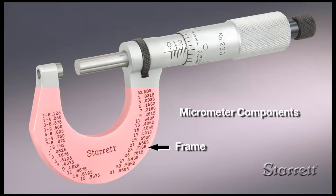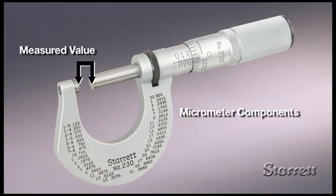The micrometer is built around a frame with a fixed anvil to the left and a numbered scale sleeve to the right. The measured value is the distance between the fixed anvil face and the spindle face that moves when turning the thimble.